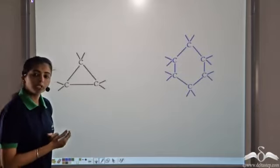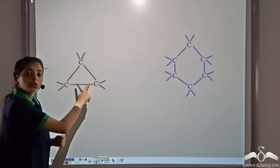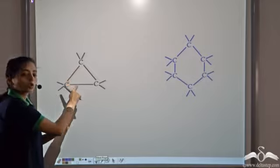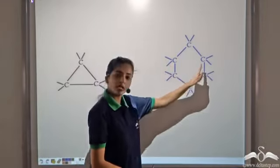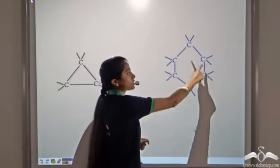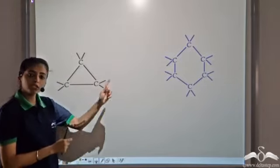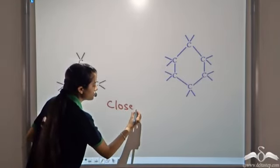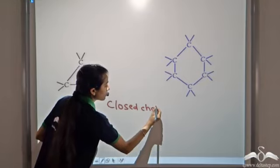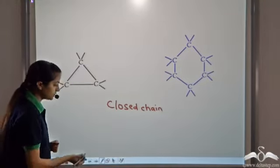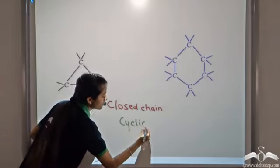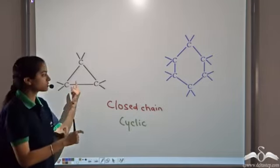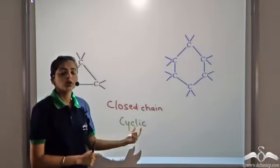Another way by which carbon links to itself is by forming a closed loop kind of structure. You can see that carbon atoms are linked to each other and form a closed loop. Such structures, in which carbon atoms are linked to each other by forming closed chain structures, are known as closed chain structures or cyclic compounds.